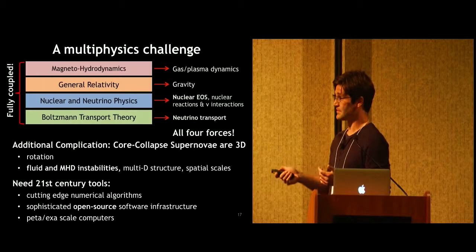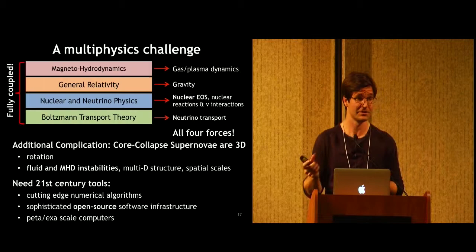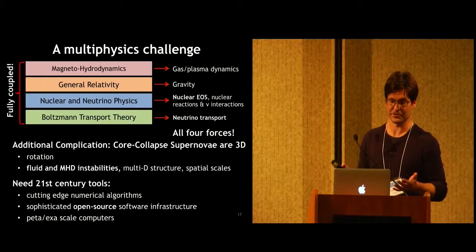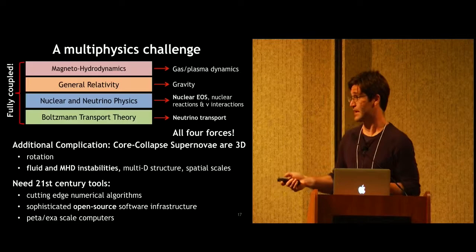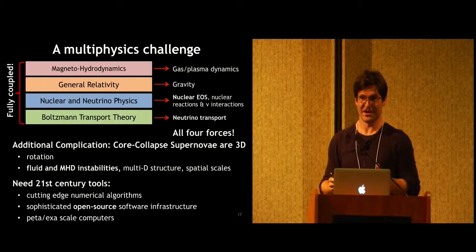Since this is the other problem, these events are really three-dimensional. So we have rotation and fluid and MHD instabilities that if you simulate them in 2D, for example, are not going to be captured correctly. So really we need to do this in 3D. So what that means is we need cutting-edge numerical algorithms. We need open-source software infrastructure that can actually deliver science results on PETA and exascale computers. So this is really something that's ideal for employing on a machine like Blue Waters.